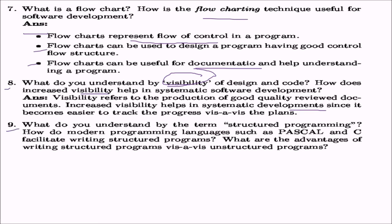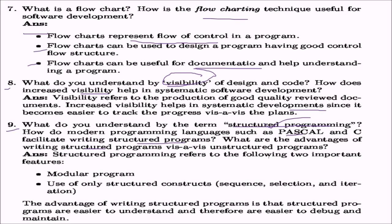Question nine asks about structured programming and how modern languages like Pascal and C facilitate writing structured programs, and their advantages over unstructured programs. Structured programming has two parts: first, modular programs with modules in the form of functions; and second, using only structured constructs — sequence, selection, and iteration — without goto statements. The advantage is that structured programs are easy to understand, easy to debug, and easy to maintain.